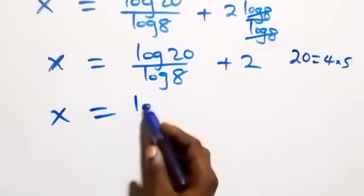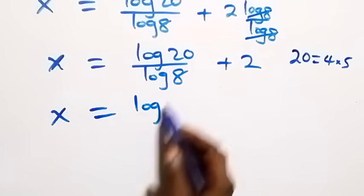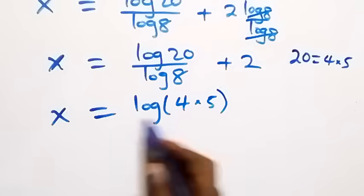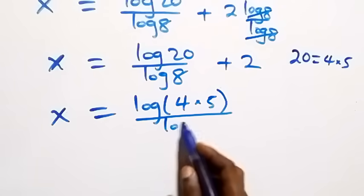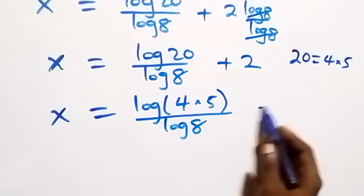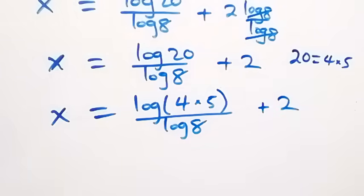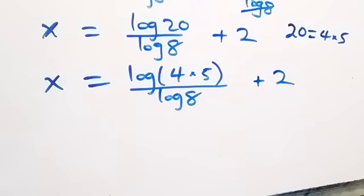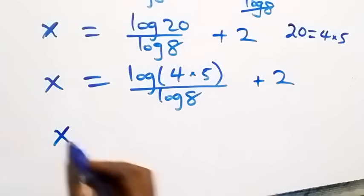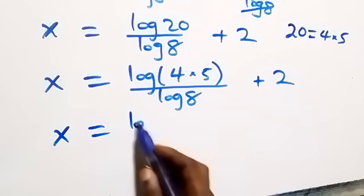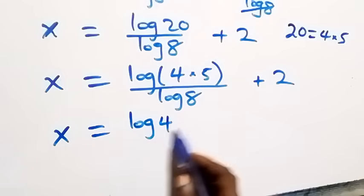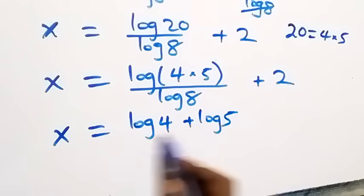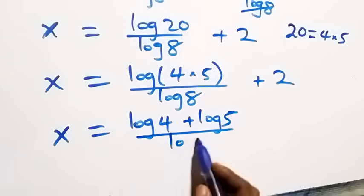Now, from here x equals log(4 × 5) over log 8, plus 2. Applying the law of logarithms, this becomes x equals log 4 plus log 5, over log 8, plus 2.